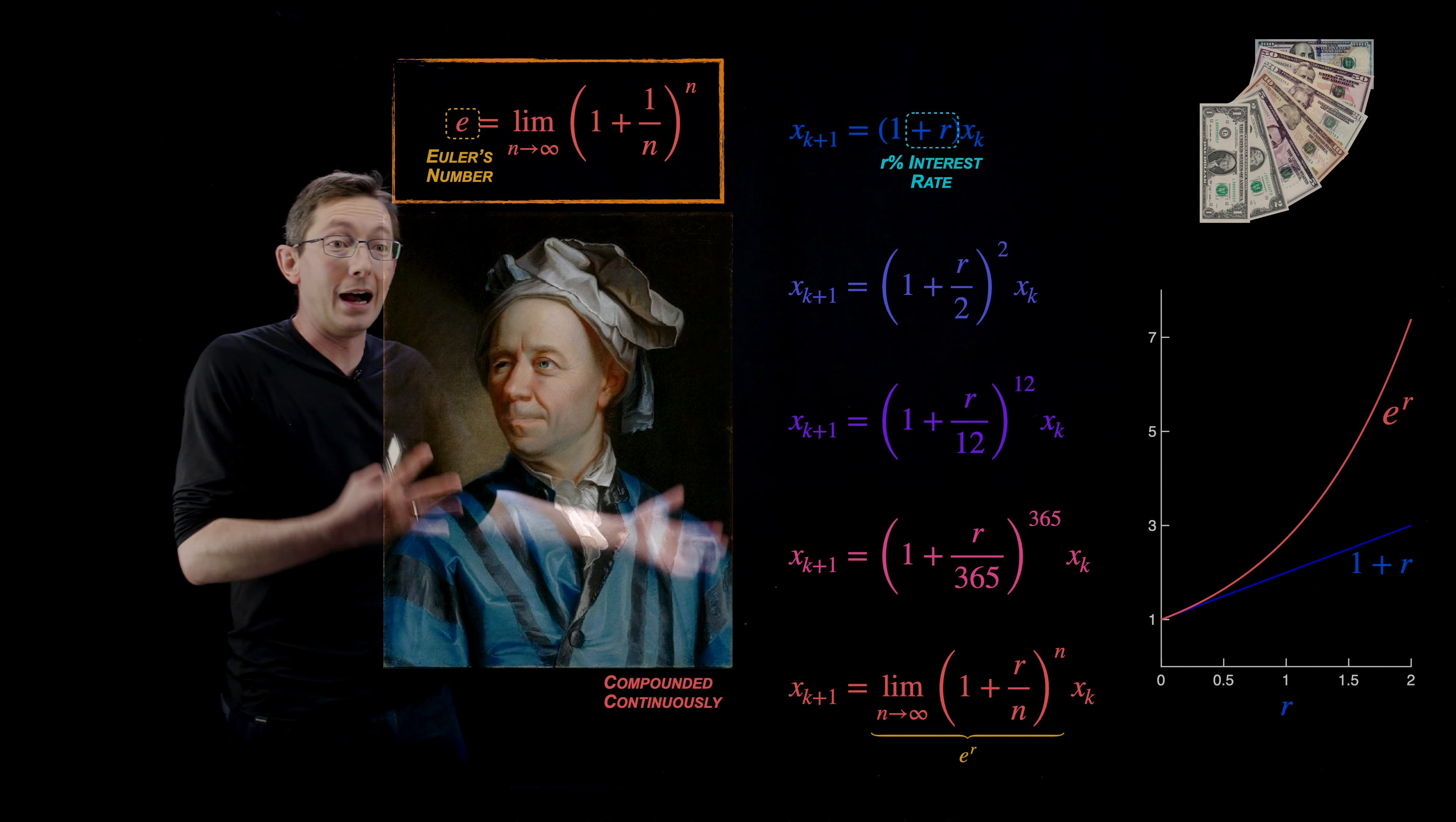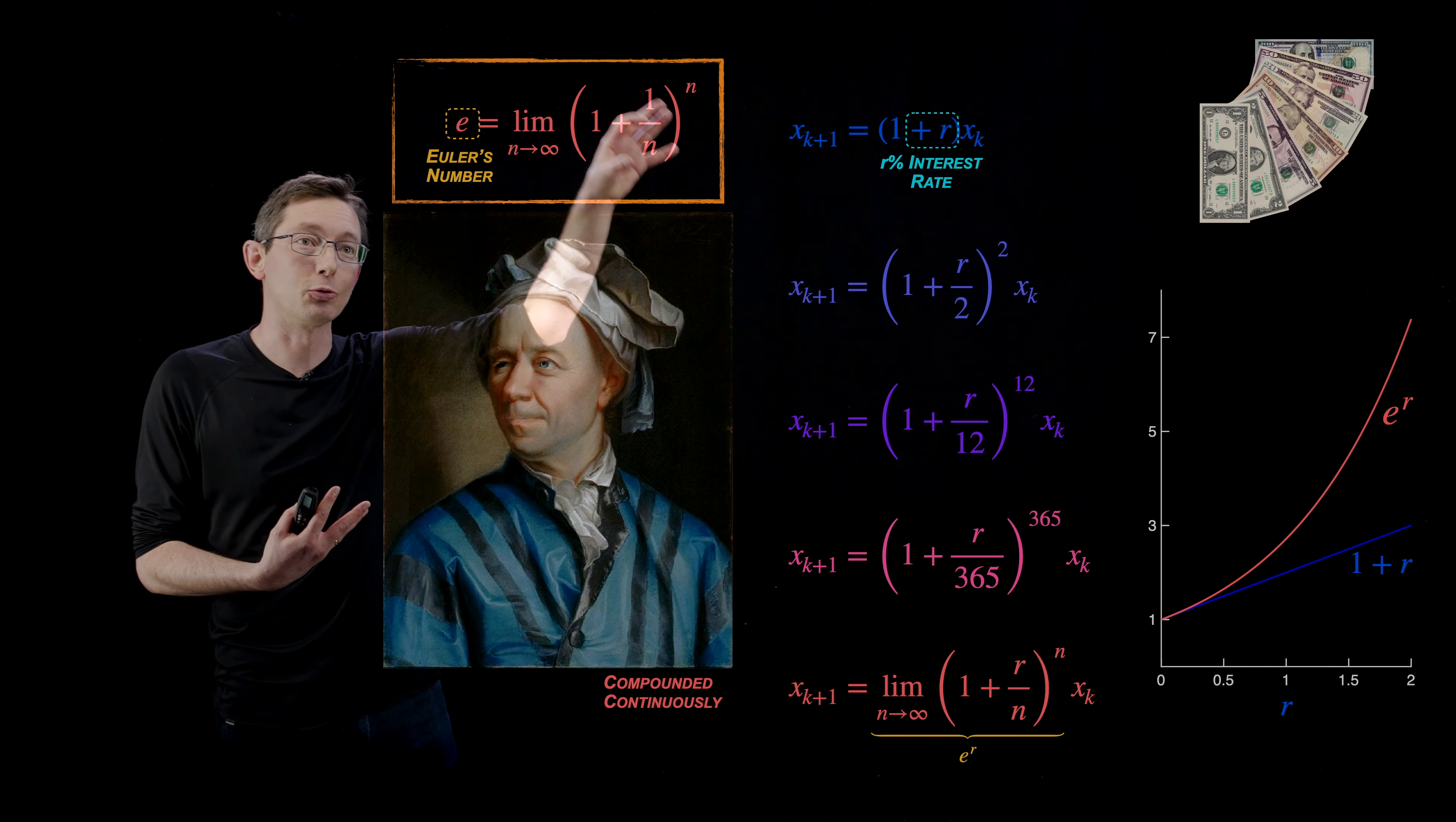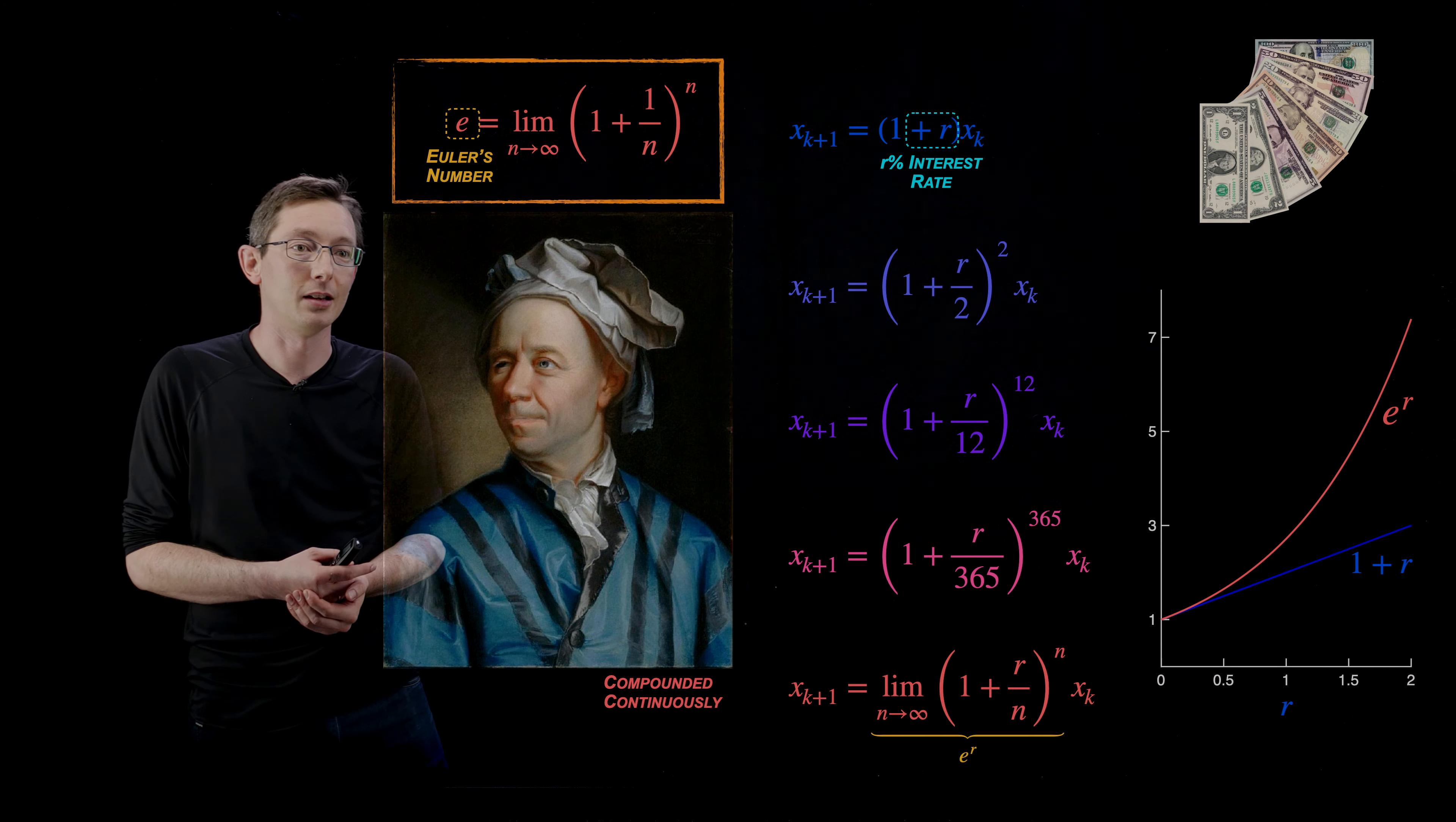I will also have a video on why this is actually called exponential growth. So we're going to actually go back through history and look at Euler and Euler's number e and how we can derive formulas for this exponential growth and how it relates to differential equations. And again, anything with Euler, you know it's a big deal. So that's going to be kind of fun.